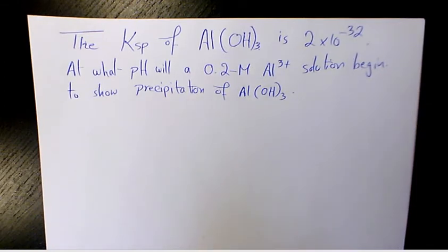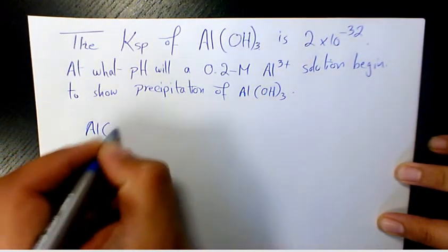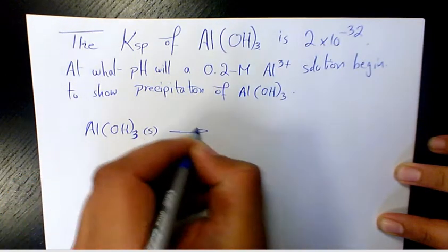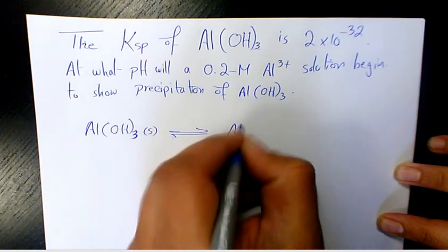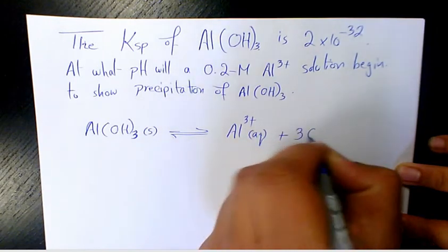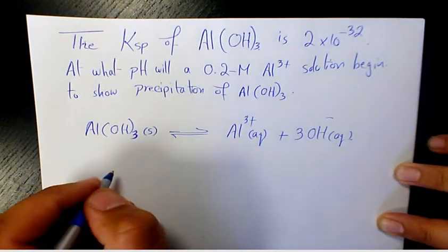will a 0.2 M Al³⁺ solution begin to show precipitation of aluminum hydroxide? So we can say aluminum hydroxide when it dissolves is going to produce Al³⁺ aqueous plus 3 OH⁻ aqueous, and Ksp is